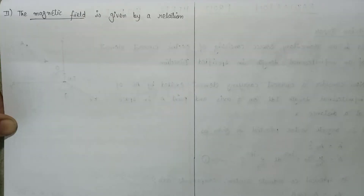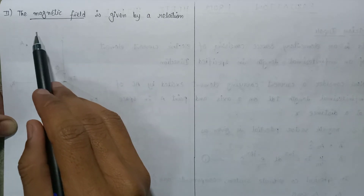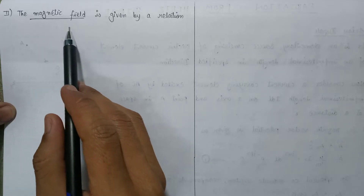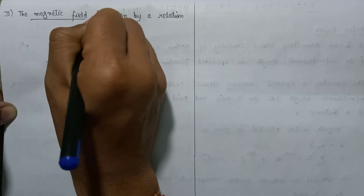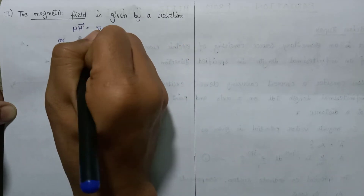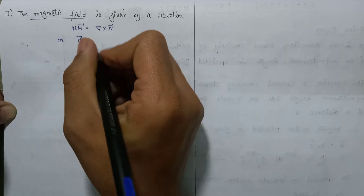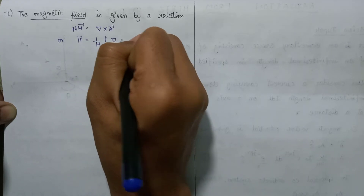We have completed the first part, calculation of components of magnetic vector potential. Now let's move on to the second part: calculation of the components of the magnetic field. We know the magnetic field can be given by the relation mu times H equals del cross A, and the magnetic field intensity H equals 1 over mu times del cross A.